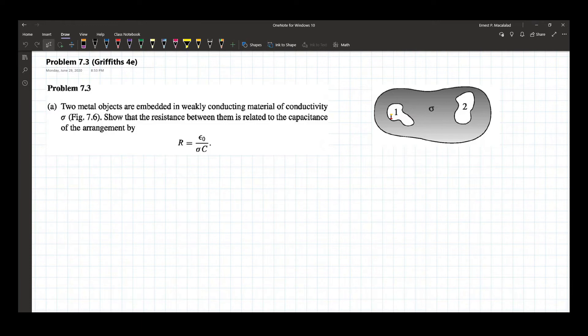Where epsilon naught is the permittivity of free space, and sigma is the conductivity of the material between the metal objects.